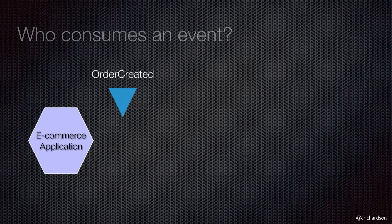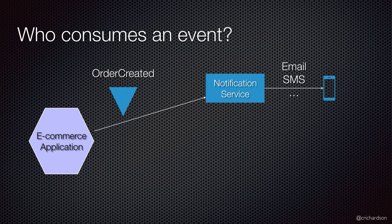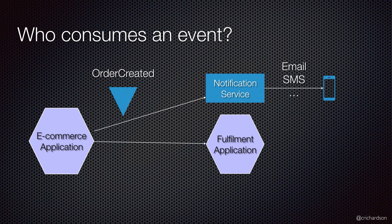So you have the idea that an application is emitting these events because of state changes or the passage of time, and then other applications can consume them. An order created event could be consumed by a notification application that sends a text message, email, or mobile notification to a user. It could also be consumed by a fulfillment application responsible for putting together the physical order and shipping it to the customer.